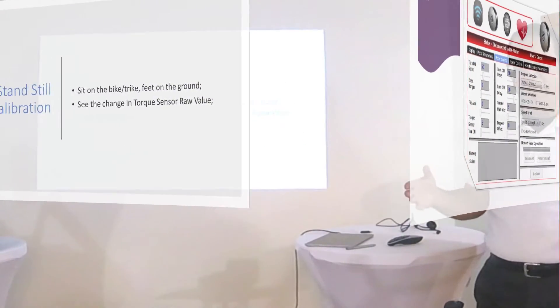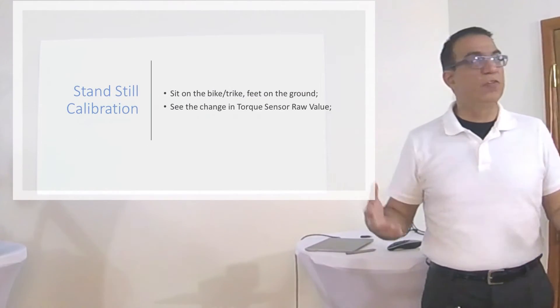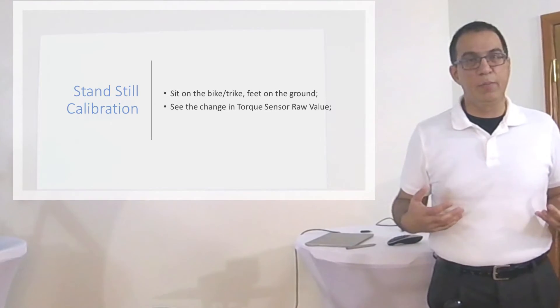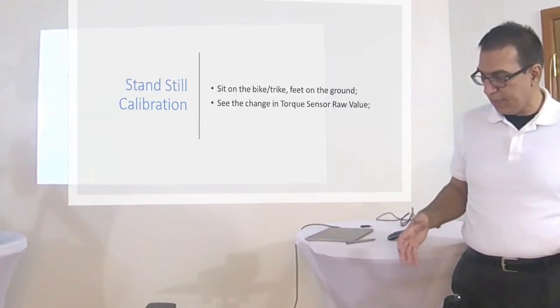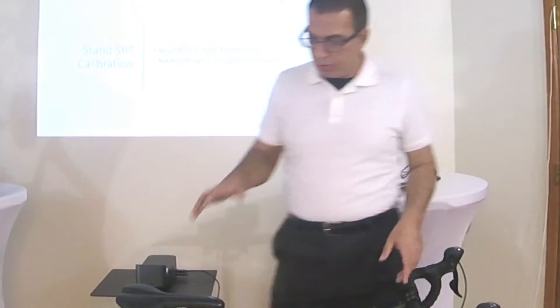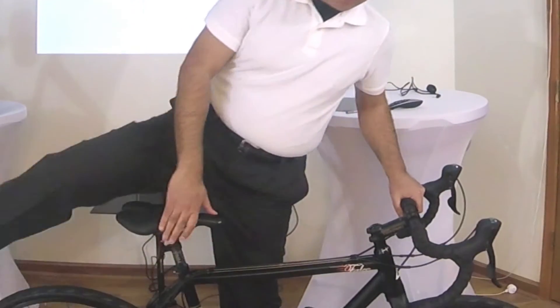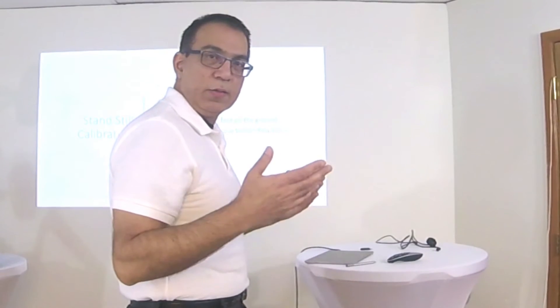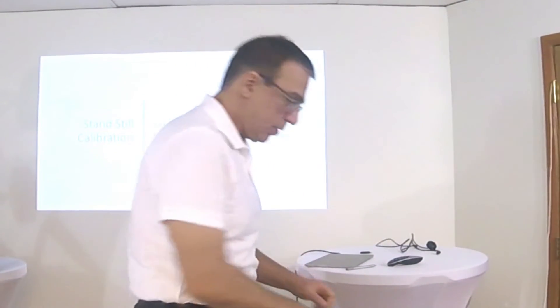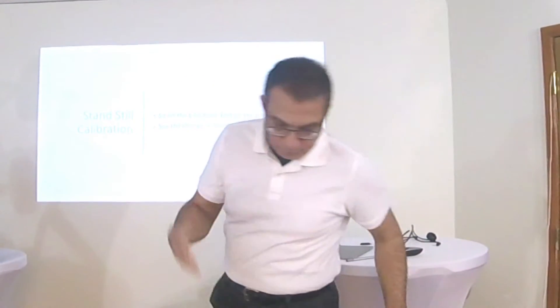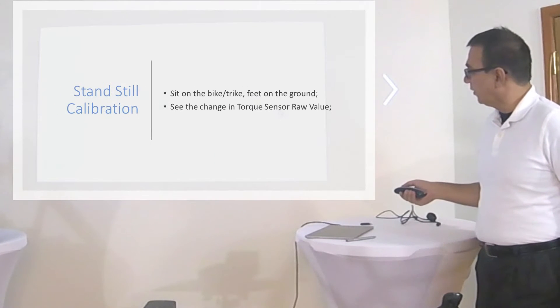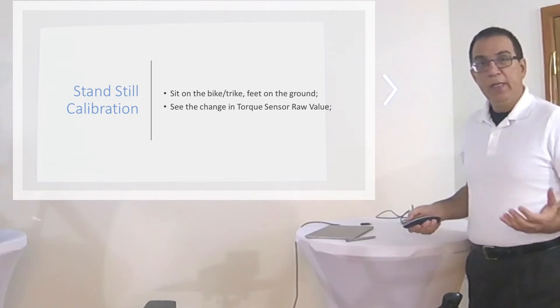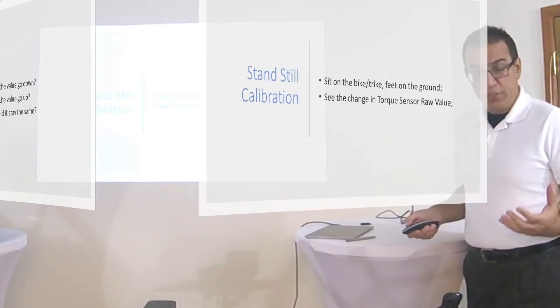The first step in calibrating is standstill calibration. What is standstill calibration? Standstill calibration is sitting on the bike with your feet on the ground and finding out what your torque sensor raw value is. This is sitting on the bike and seeing the change in the torque sensor raw value. This essentially is the process of standstill calibration.